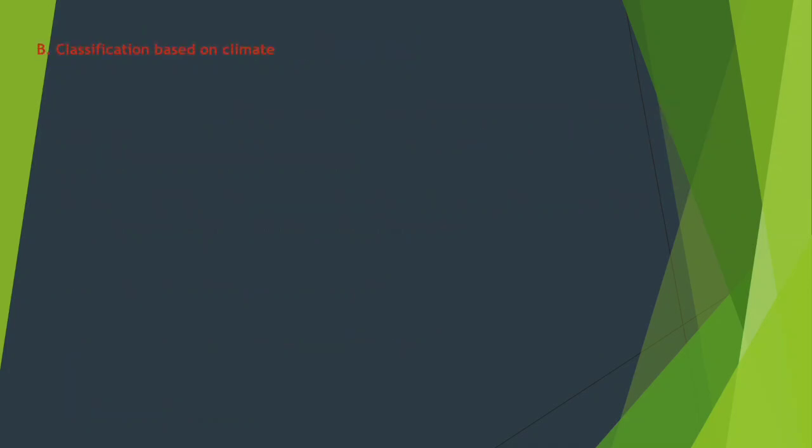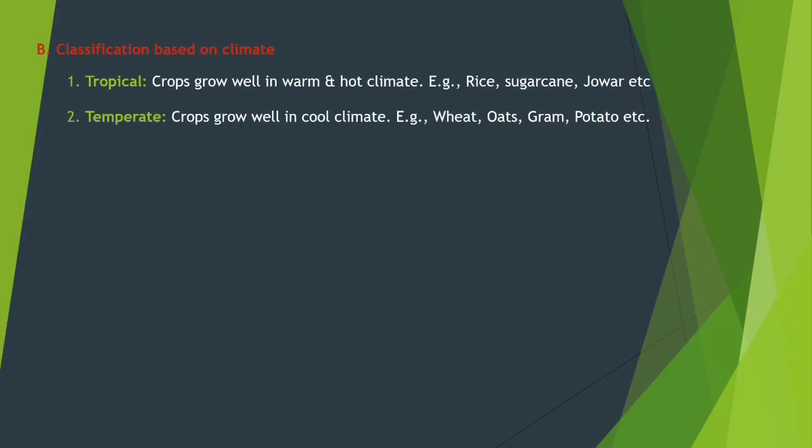The second classification is based on climate, divided into two parts: tropical crops and temperate crops. Tropical crops grow well in warm and hot climates — for example, rice, sugarcane, and jowar. Temperate crops grow in cool climates — for example, wheat, oats, gram, and potato.